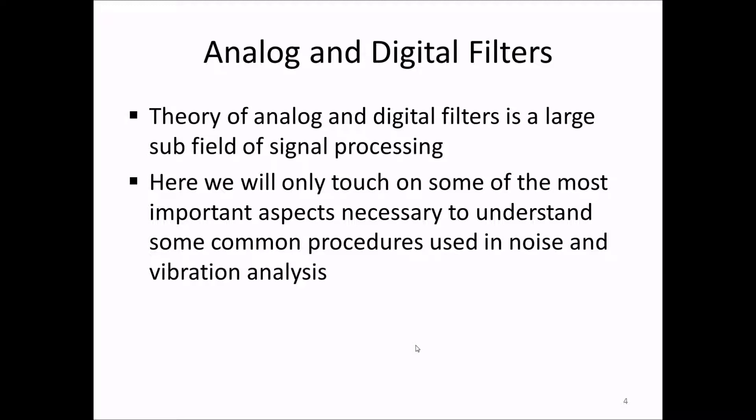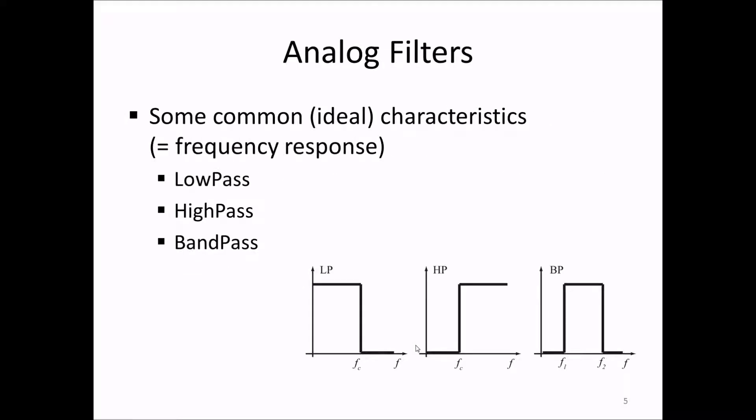We will not go into how to design analog filters or build them. But such filters are electronic devices made up by electronic components such as resistors, capacitors and operational amplifiers or op amps. We usually describe filters by their characteristics, which is the same essentially as their frequency response.